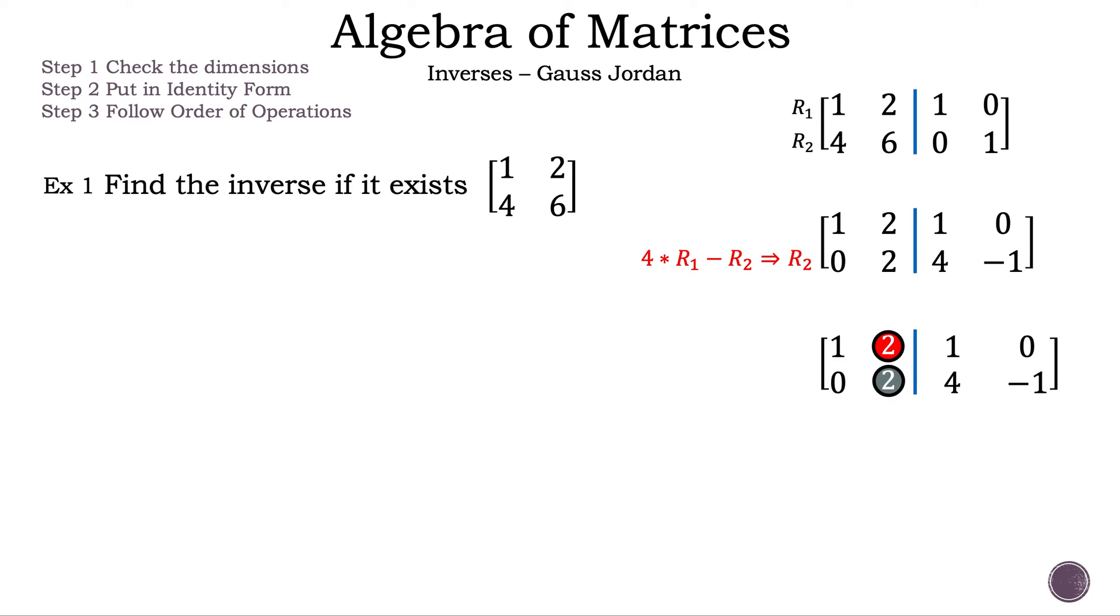Let's take a look at the second column, or where we have the two 2s. The red circle 2, or the 2 on top, needs to be a 0 to match the identity matrix. And the gray circle 2, or 2 on bottom, needs to be a 1 to match the identity matrix. Let's do some operations together so when we add or subtract the two rows together, the 2 on top becomes a 0. What do you think we need to do?